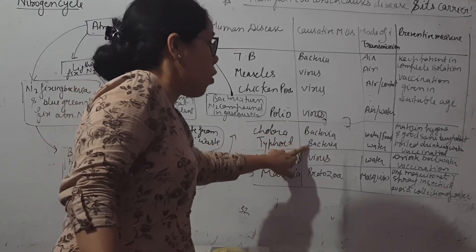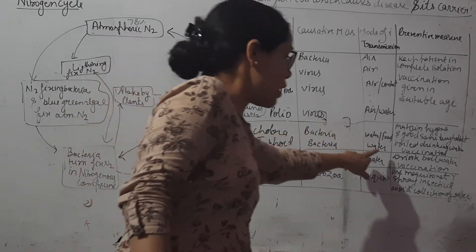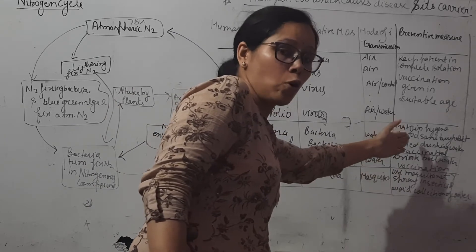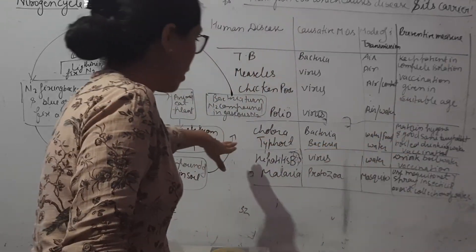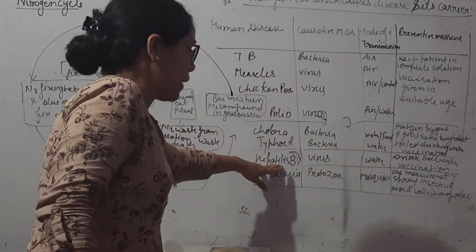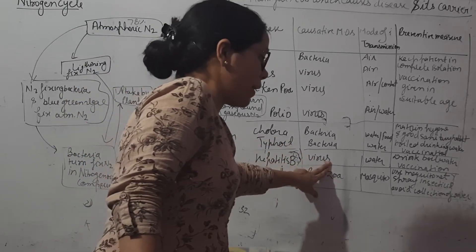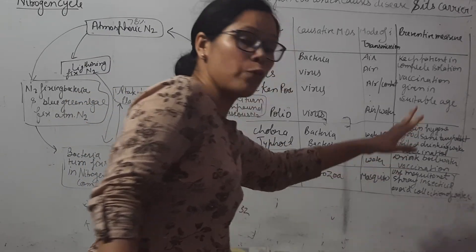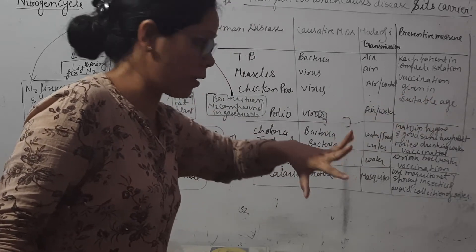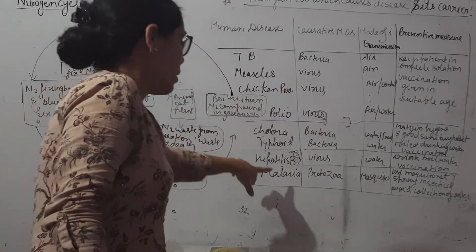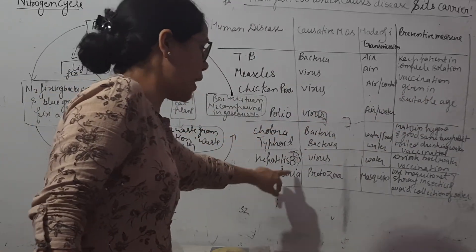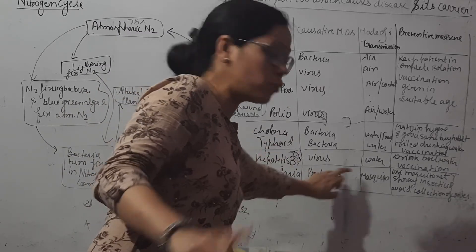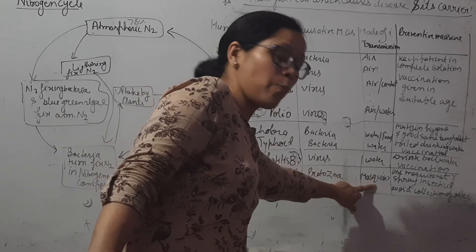Typhoid is caused by bacteria and the mode of transmission is water — follow the same prevention measures. Hepatitis B is caused by a virus spread through water, so we should drink boiled water and use vaccination.